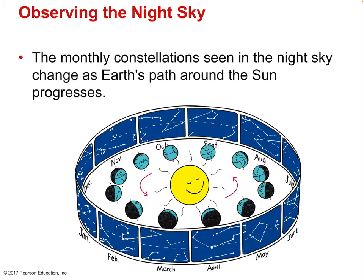The monthly constellations seen in the night sky change as Earth's path around the sun progresses. For example, in February, the constellation behind the sun is associated with the zodiac. In that case, we might have the constellation Pisces — but we wouldn't actually see it in the night sky, because it's behind the sun. In antiquity, the idea was that a constellation living with the sun gave it special significance.